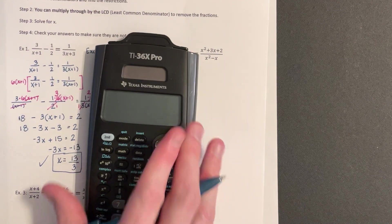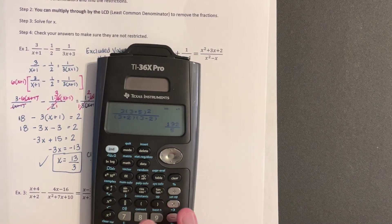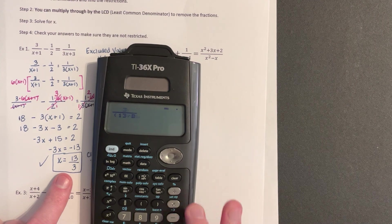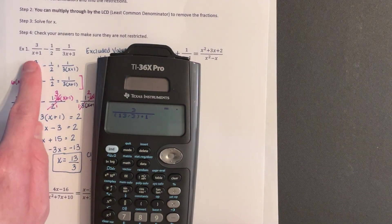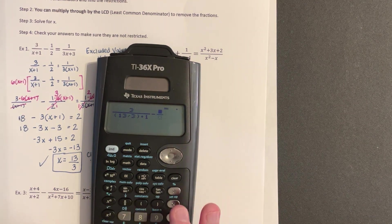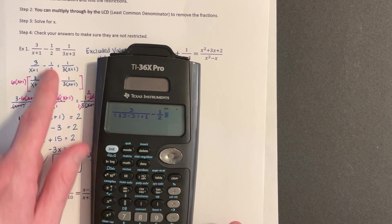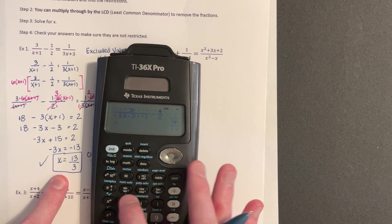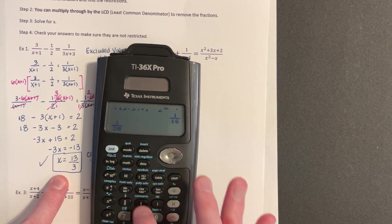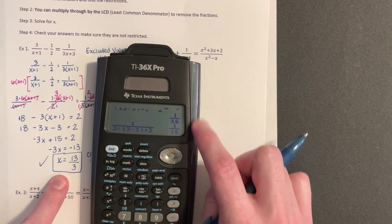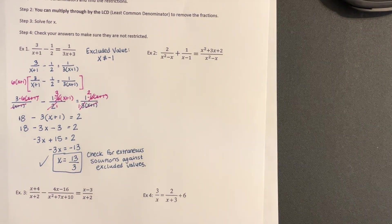If you wanted to plug your answer back into your equation, you can. Using your fraction button, it would be 3 over — our X value was 13 over 3 — plus 1, then go out of the fraction minus 1 half. That side should equal the same thing as when we plug X in on the right side, which was 1 over 3 times 13 over 3 plus 3. I get 1/16 each time, so that value does work in our equation.